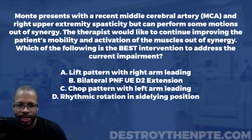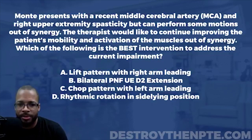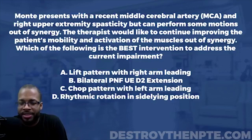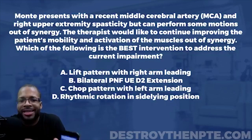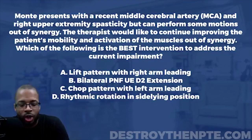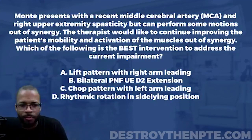Starting with the first part of the question: the patient has a recent MCA stroke and right upper extremity spasticity, but can perform some motions out of synergy. We need to ask what that is consistent with when talking about Brunnstrom stages. This is Brunnstrom stage four — that's the stage associated with movement out of synergy.